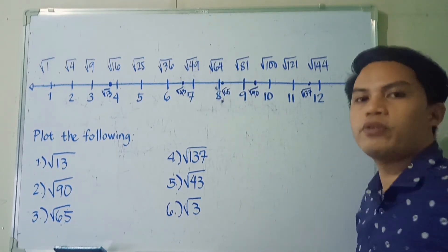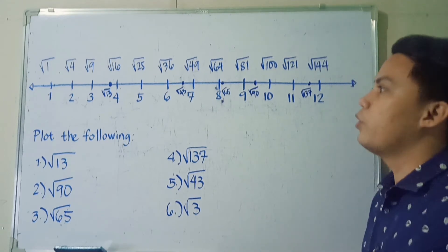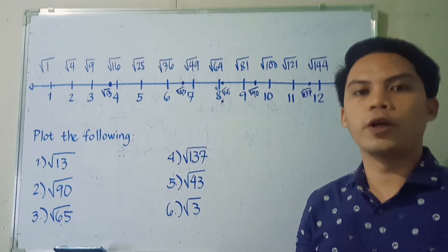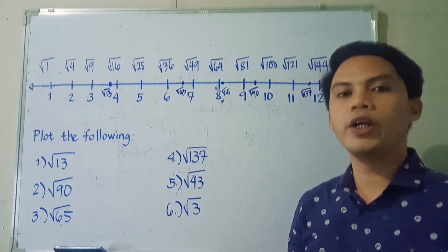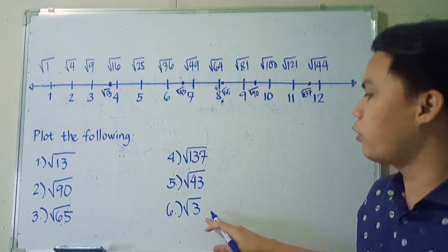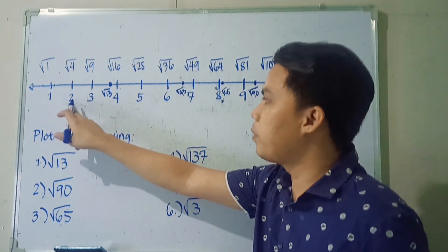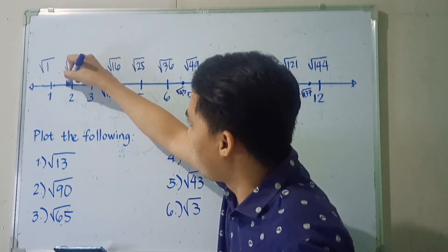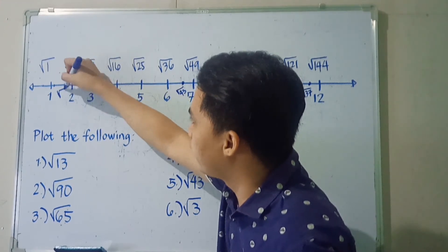And lastly, we have square root of 3. It's between square root of 1 and square root of 4. And it's closer to square root of 4. So we'll place the square root of 3 closer to the 2 units. So we're going to write here or plot square root of 3.